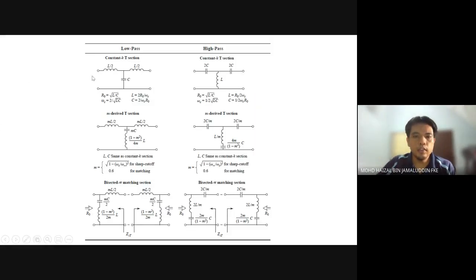If you want to design a low pass filter, we will use this part. If you want to use a high pass filter, we use this part. It is just a combination of constant K and M-derived. We need to choose M less than 0.6 for sharp cutoff, and for matching, 0.6 for both input and output matching.